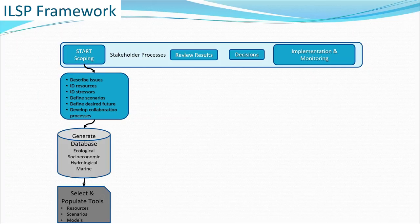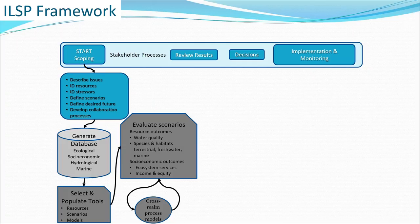From there, we generate a database of spatial and non-spatial information that can represent these different scoping factors. We select and populate tools that can address our modeling and representation needs for resources and scenarios. This is a scenario-based framework. From there, after we've characterized scenarios, we evaluate them in terms of resource outcomes and socioeconomic outcomes, which includes the cross-realm process modeling.